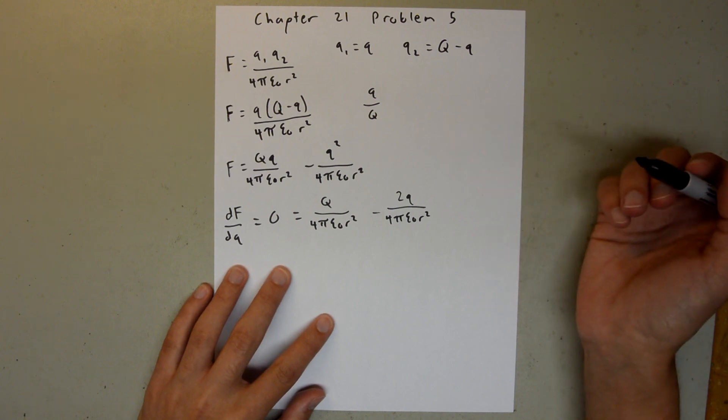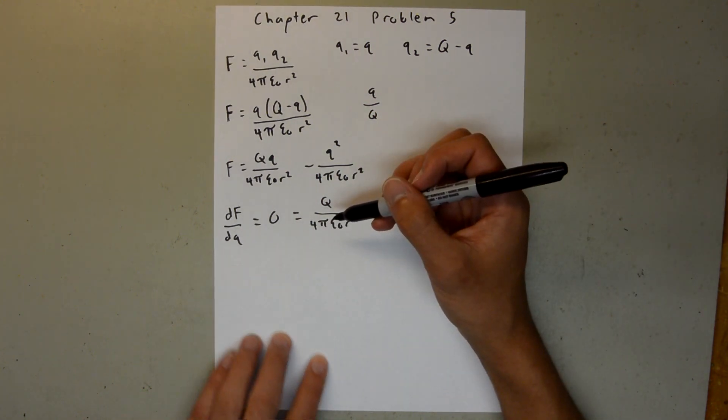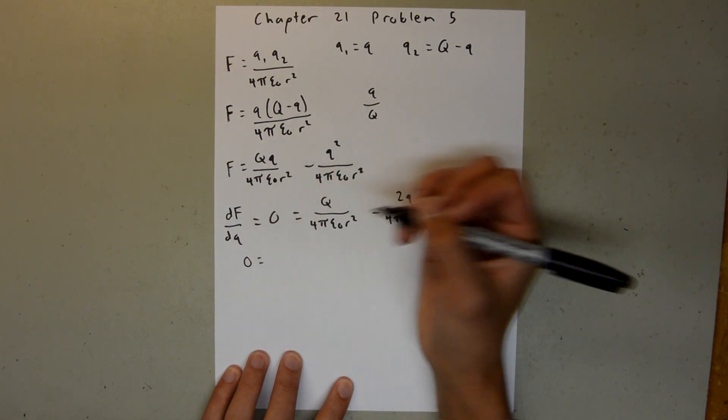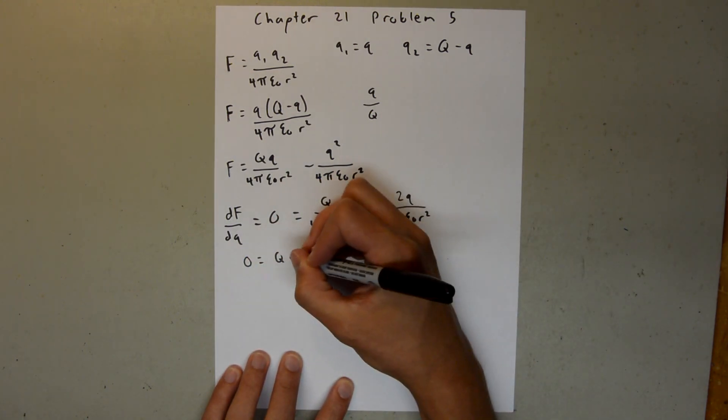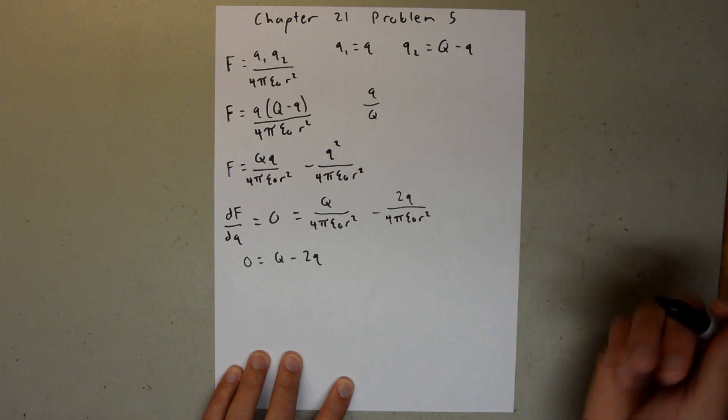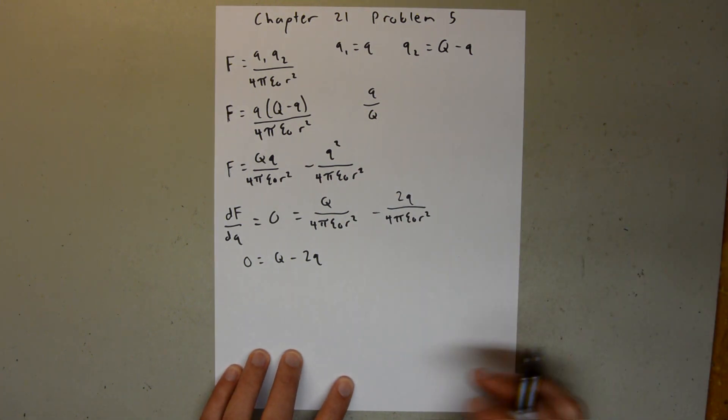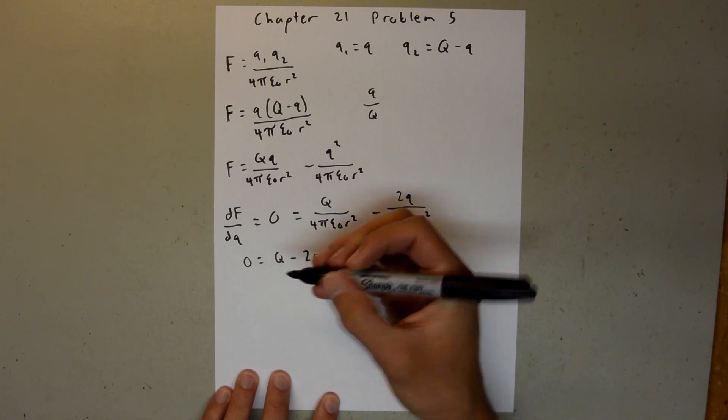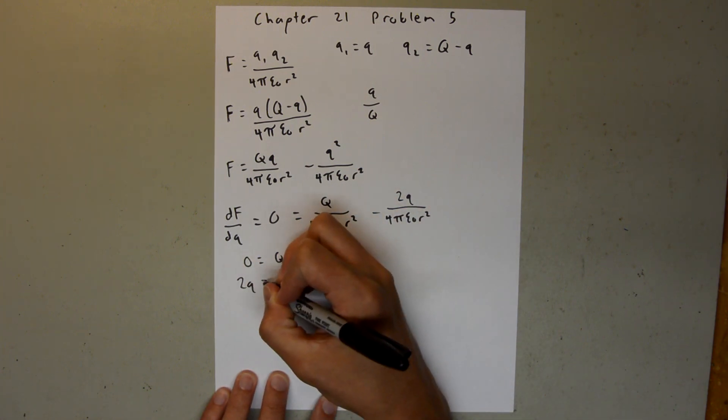And now, we can multiply both sides by this denominator, essentially clearing the denominator. So, we'll get 0 is equal to Q minus 2q. And now, we can move this little 2q to the other side. So, we'll have 2q is equal to Q.